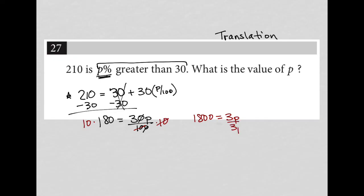Divide both sides, not by 3p, just divide both sides by 3. And I have 600 equals p. So there's my answer. The answer here for us is 600.